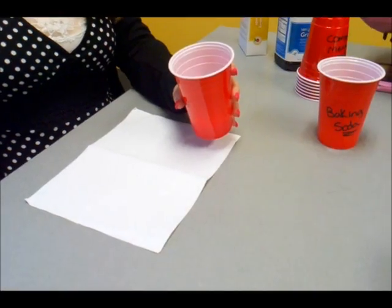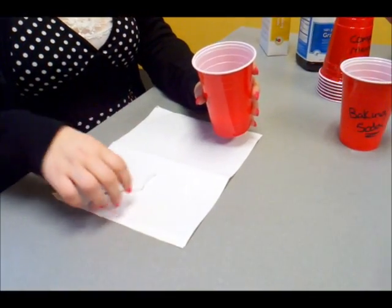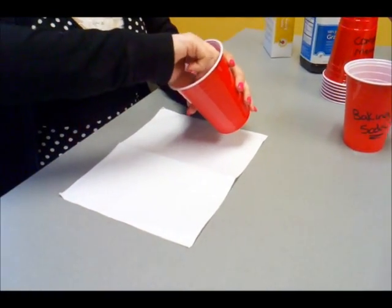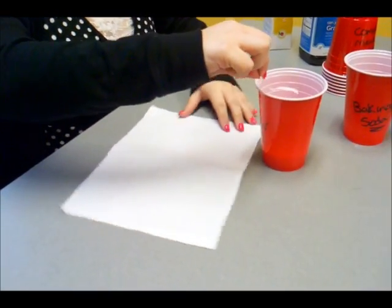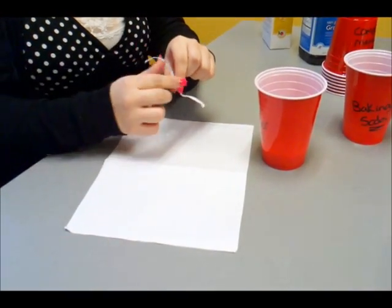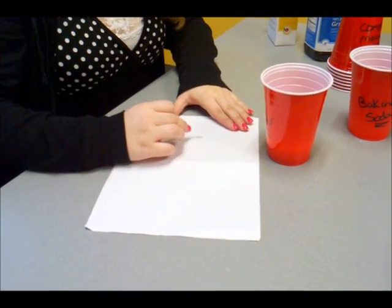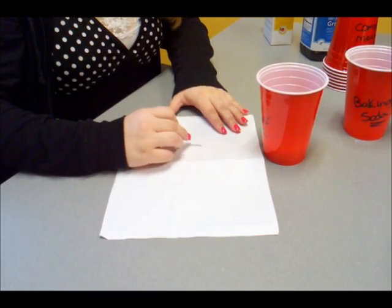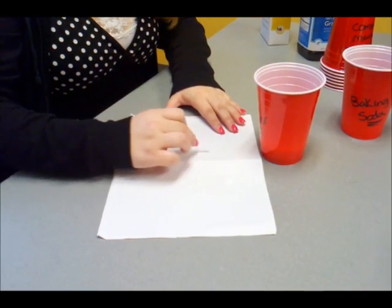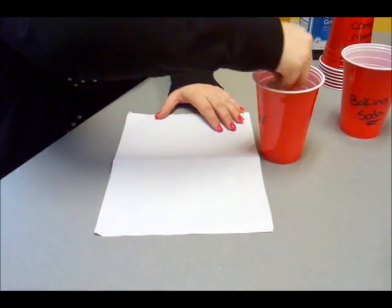Once it's mixed, you take another stirring rod, which is also recycled. And you're going to dip it in there and draw your message. This is probably the most difficult part of the whole experiment.